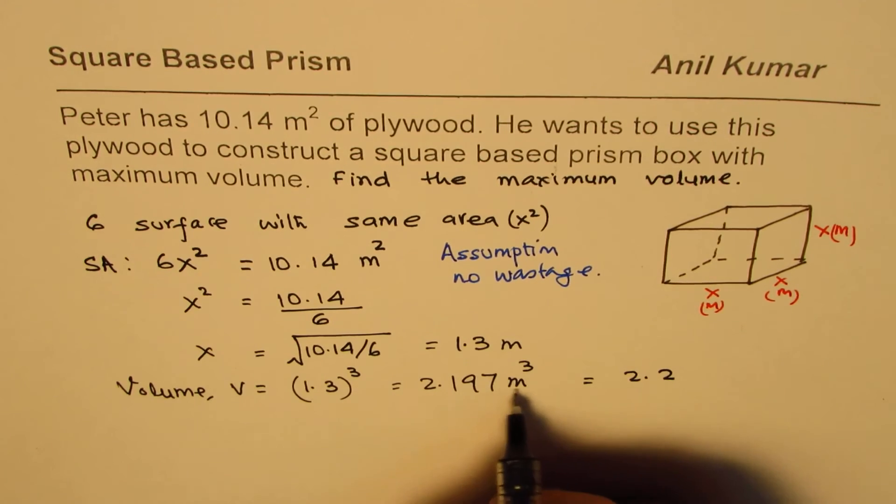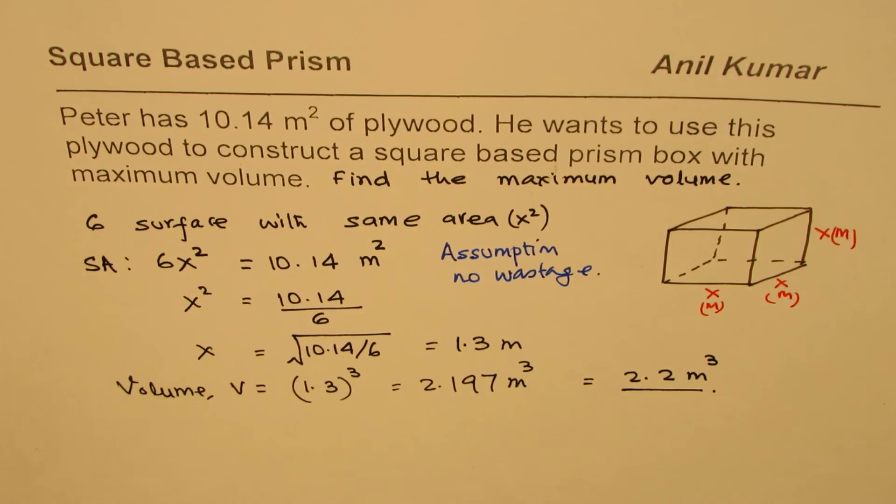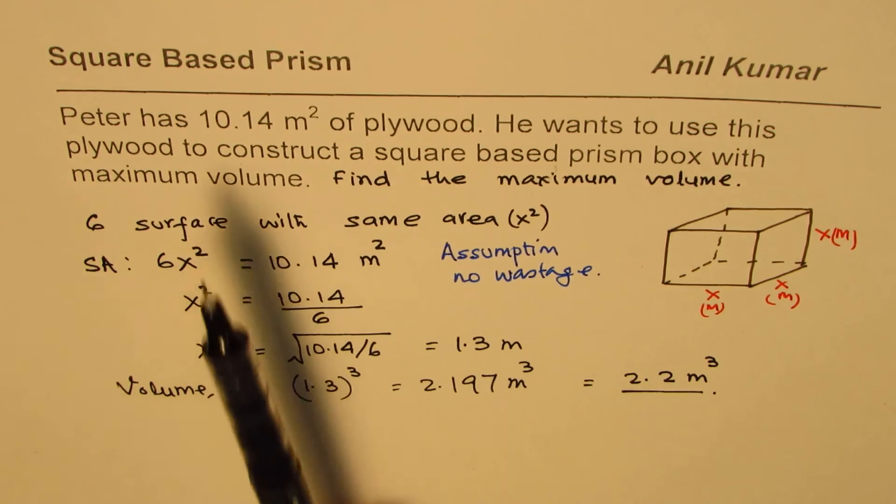You can always round this volume. In this case, let's round it to 2.2, that's a good approximation. 2.2 cubic meters becomes the volume of this square-based prism, the maximum volume.